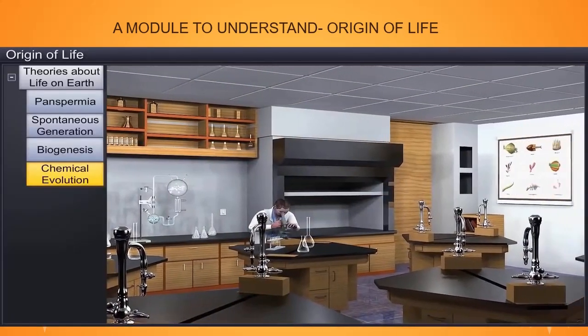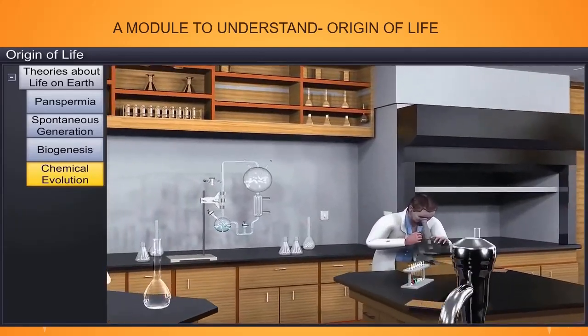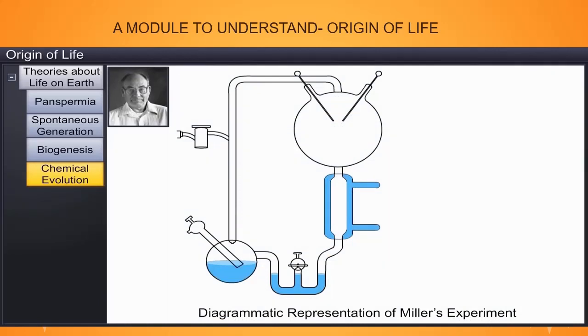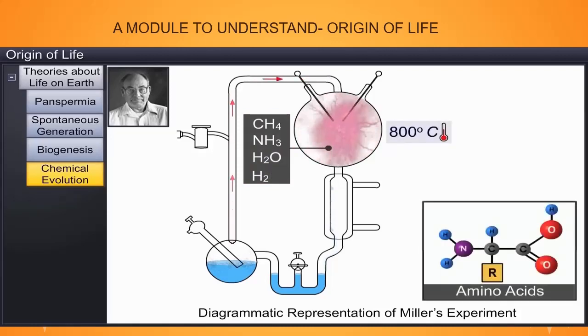In 1953, American scientist Stanley Lloyd Miller recreated these conditions in a laboratory. He created an electric discharge in a closed flask containing methane, ammonia, hydrogen, and water vapor at 800 degrees centigrade, and observed the formation of amino acids.